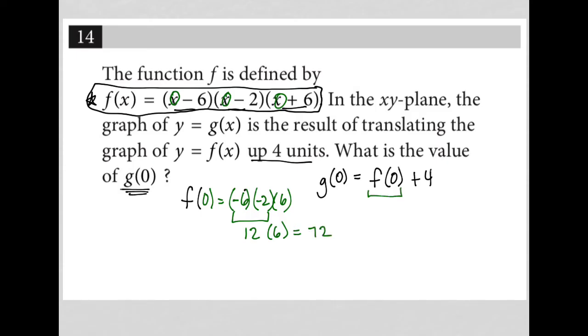But that's just my f of 0 value, right? So g of 0 would now equal 72 plus 4. Therefore, g of 0 is equal to 76. 4 units above where you'd expect it to be for f of 0. That's literally what the question tells us.